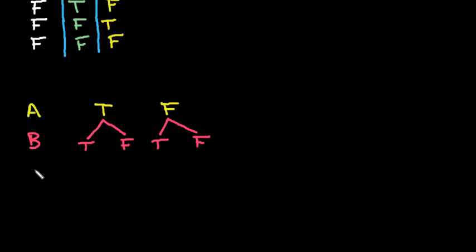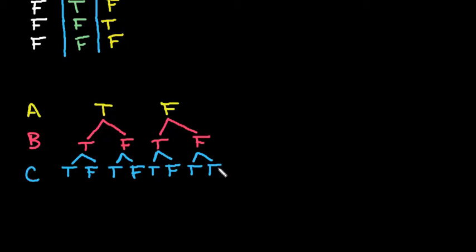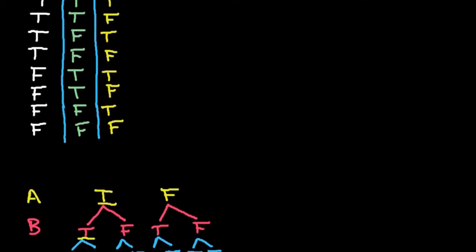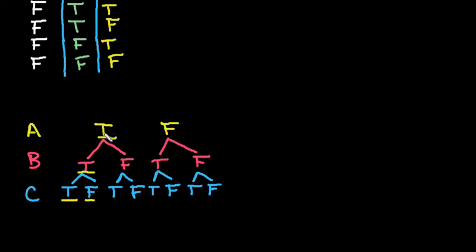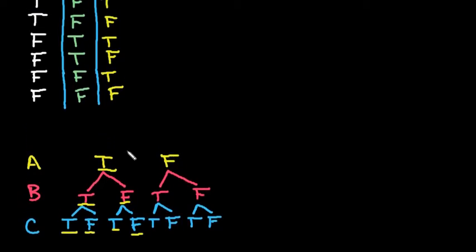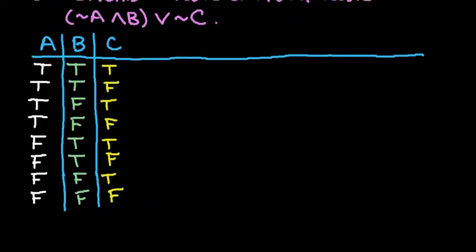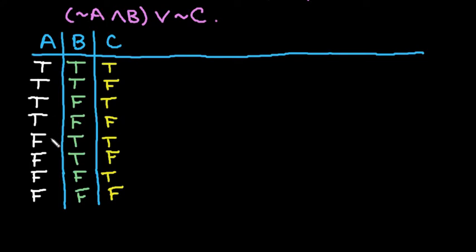Now we throw into the mix a third variable, so those branches off twice more giving true, false, true, false, true, false, true, false — a total of eight combinations. You can see the first pattern is true, true, true; then true, true, false; true, false, true; true, false, false; and so on. Typically I just memorize the pattern as four trues, four falses; two trues, two falses, two trues, two falses; then alternating.